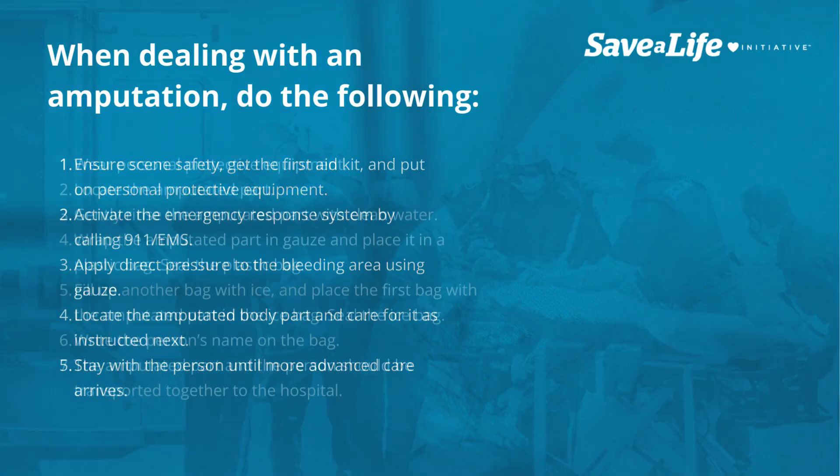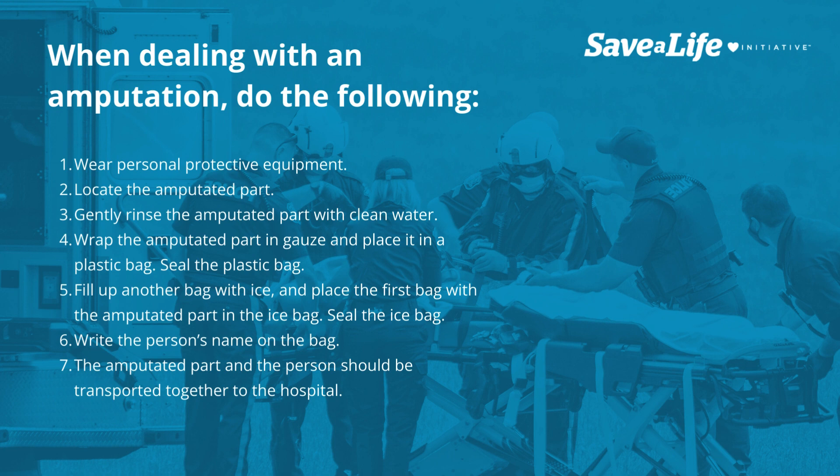Five, stay with the person until more advanced care arrives. When caring for the amputated part: one, wear personal protective equipment; two, locate the amputated part; three, gently rinse the amputated part with clean water; four, wrap the amputated part in gauze and place it in a plastic bag and seal the bag; five, fill another bag with ice and place the first bag with the amputated part inside, then seal the ice bag; six, write the person's name on the bag; seven, the amputated part and the person should be transported together to the hospital.